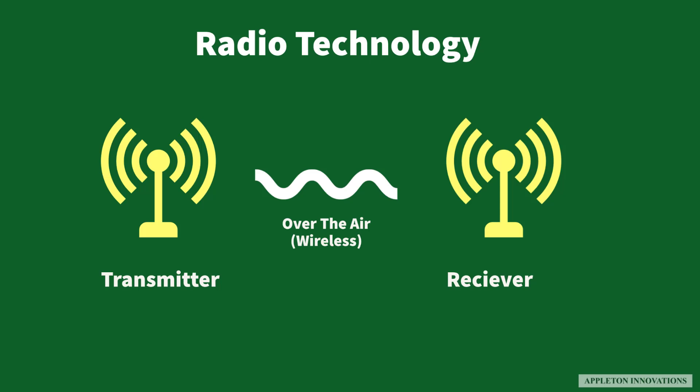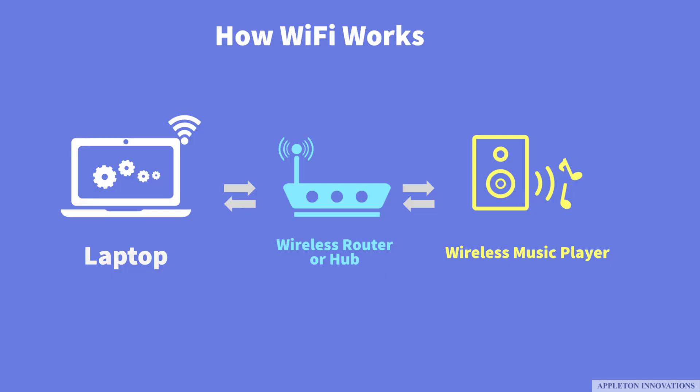Wi-Fi uses radio technology to transmit and receive data at high speed — you can transmit in Mbps over a wireless network. Any Wi-Fi enabled device usually connects to a central router or hub, and through the router or hub we make contact with other linked IoT or wireless devices. For example, your laptop hooks up to a router that is linked to a wireless internet speaker; when you play music, the laptop transmits signals through the router to the internet speaker.